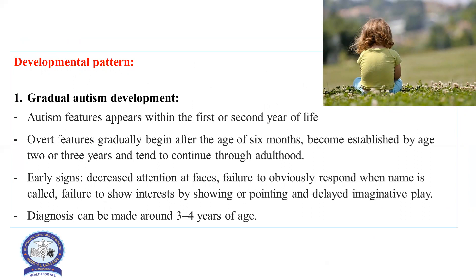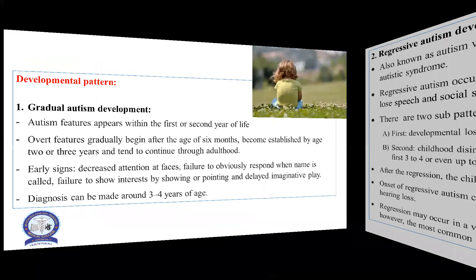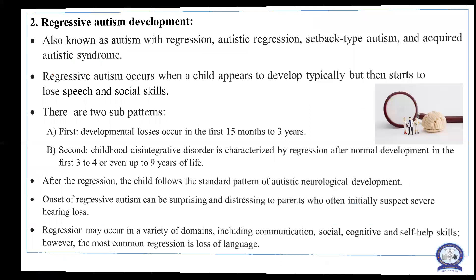There are two developmental patterns of autism. The first is gradual autism development, where autism features appear within the first or second year of life. Features gradually begin after the age of six months, become established by age two to three years, and tend to continue throughout adulthood. Early signs include decreased attention to faces, failure to respond when name is called, failure to show interest by showing or pointing, and delayed imaginative play. Diagnosis is made around three to four years of age.